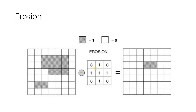Here we are going to use erosion. Just a quick recap: we are having one binary image and a structuring element. If the structuring element fits on a part of the binary image, the central pixel will remain; if the structuring element is not fitting, those particular elements will wash away. The shaded pixels indicate value 1 (white) and the other pixels denote value 0 (black). We are having a structuring element of plus shape.